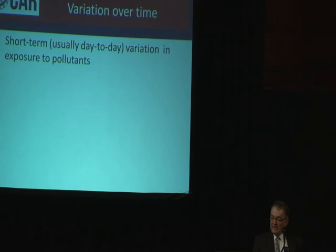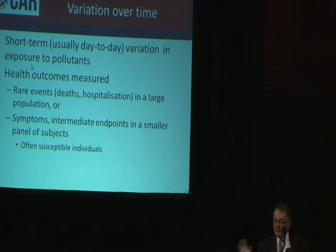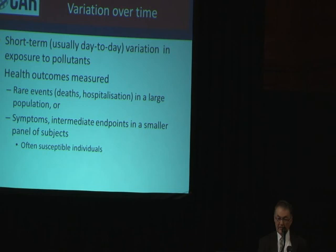The other way we can study variation, apart from spatial variation between places, is temporal variation — looking at day-to-day variation in exposure to pollutants. This is usually done in two ways: looking for the relationship between short-term variation in exposure to pollutants and the occurrence of rare events such as deaths and hospitalisations in large populations like cities or multiple cities, or in small groups or cohorts.